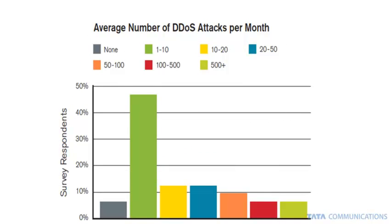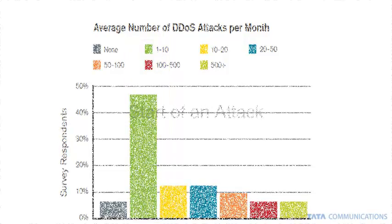As reported on the second side of this slide, we're able to see that most providers — near 50% — are reporting between 1 and 10 attacks per month on their network resources.